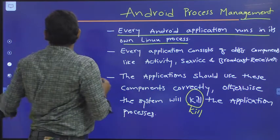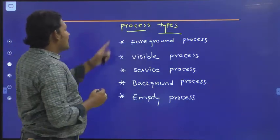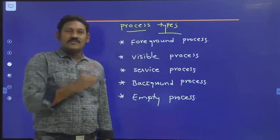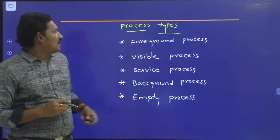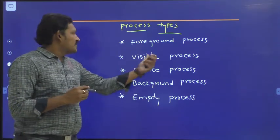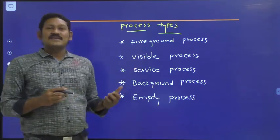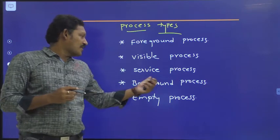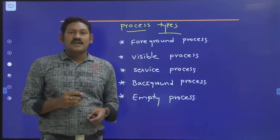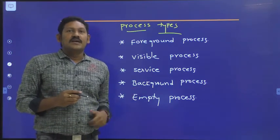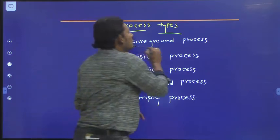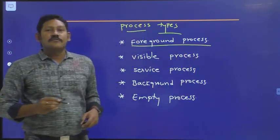Now we will see the process types. We have different types of processes like foreground process, visible process, service process, background process, and empty process. We will see them in detail.